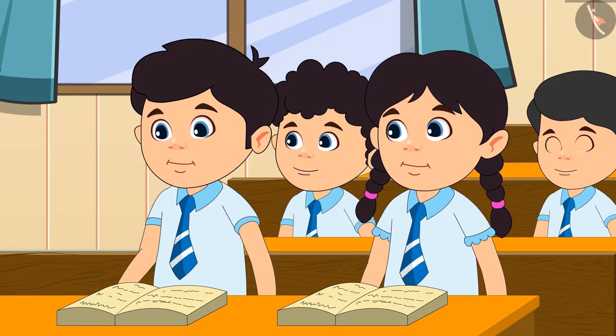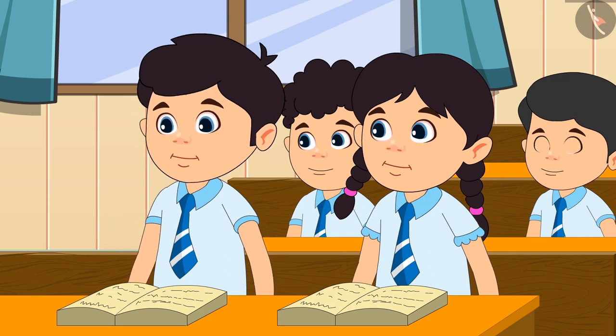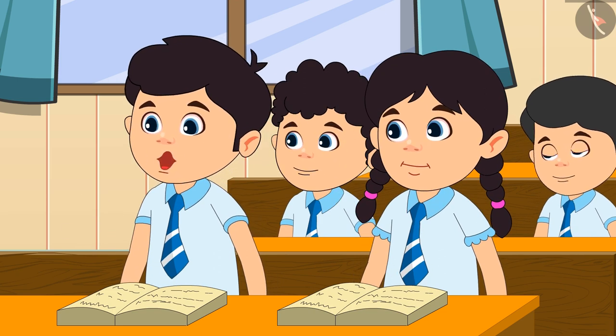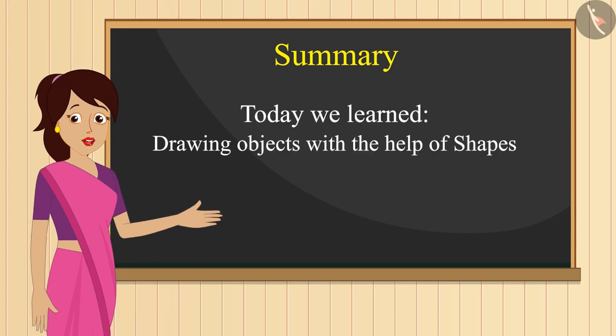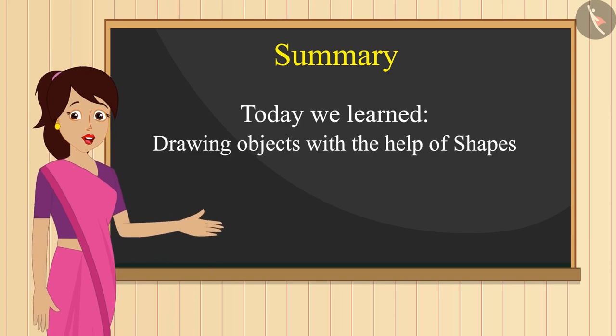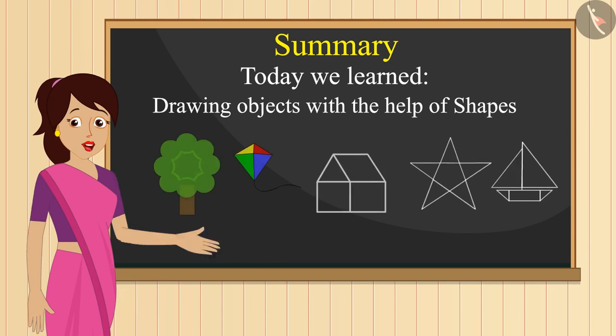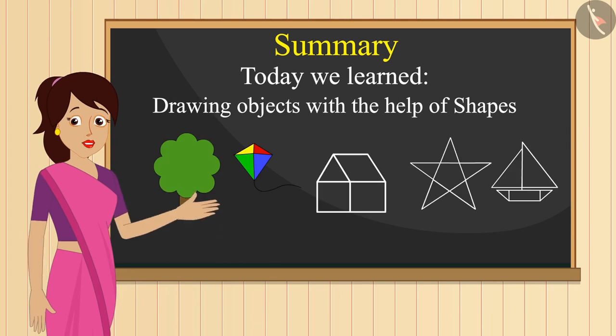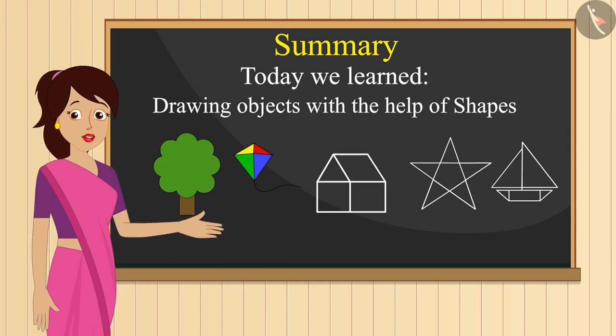Oh wow! The boat is made by just using the shape of rectangle and triangle. Summary: So children, did you all see how easily Ravi and Priya drew objects with the help of shapes? I hope you have also learned to draw these objects.